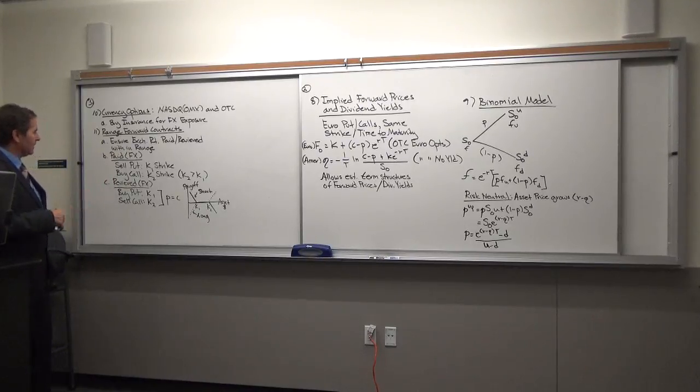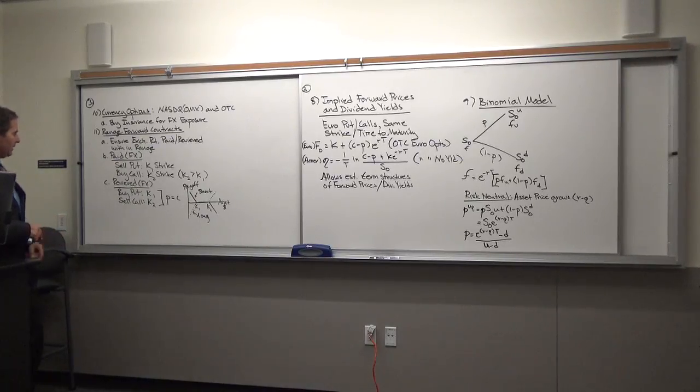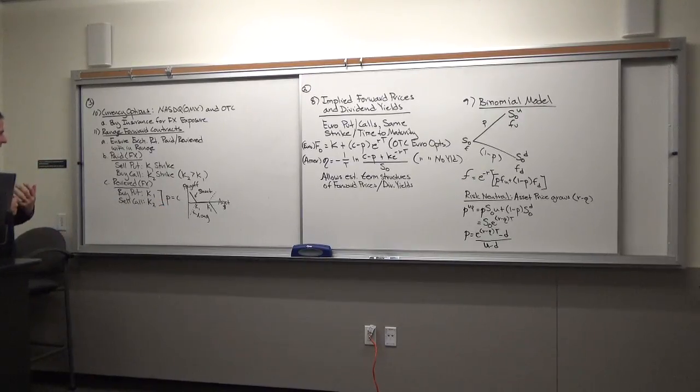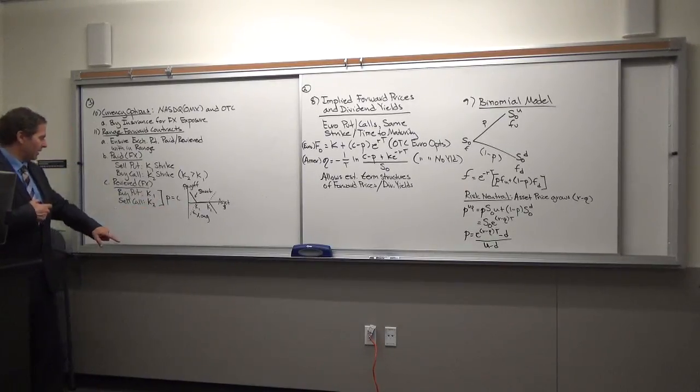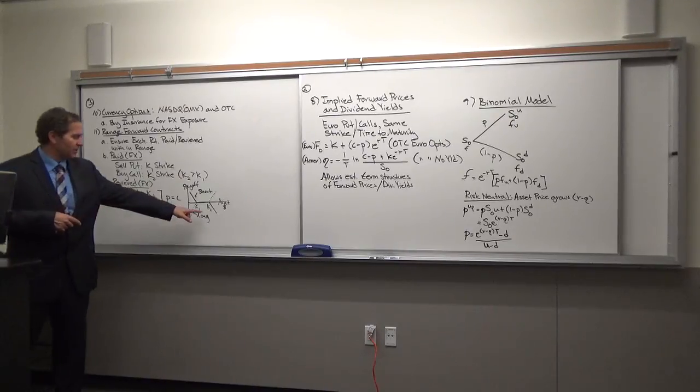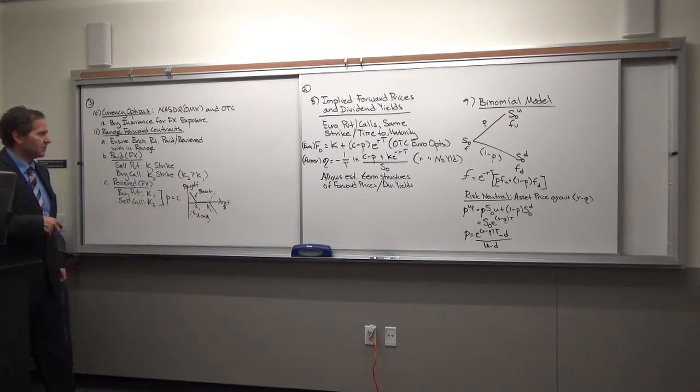You could have a range of foreign contracts that ensure that the exchange rate paid or received is going to be within some kind of range. If you're paying foreign currency, you're going to sell a put at a given strike price and you're going to buy a call also at a given strike price. If you're receiving the foreign exchange, you're going to buy the put at a given strike price and you're going to sell the call at a given strike price. And again, in both situations, the strike price K2 is always going to be greater than K1.